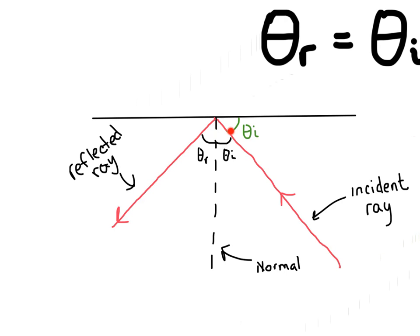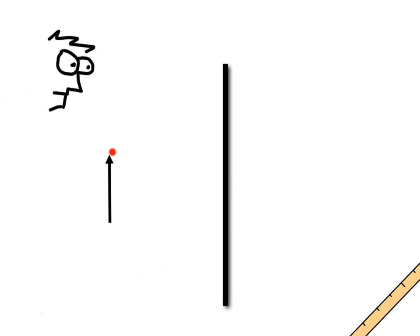Now let's learn how to draw a ray diagram with a situation. We have our plain mirror — just a flat mirror — and here's our object, which we represent as an arrow to keep things simple. And here is you looking at the mirror to see the image formed from the object. There are three steps I use when drawing a ray diagram.